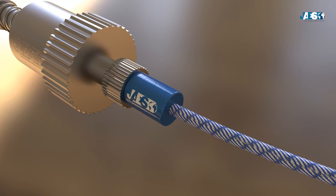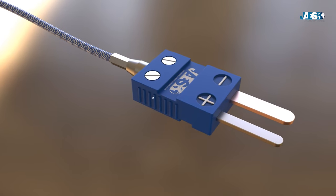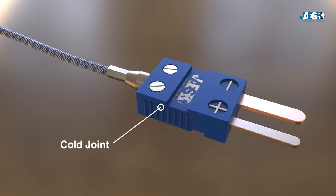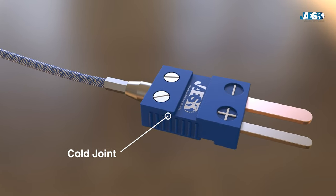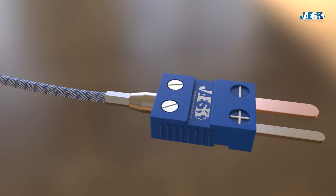On the other hand, there is the other end, called the cold joint. From here we will start two metal connections, generally made by copper, which will then be hooked to a measuring instrument to detect the temperature provided by the probe.